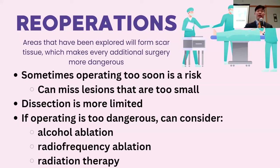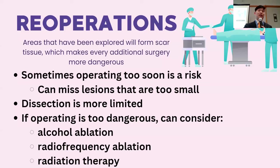Reoperations are different from the first approach. Operating too soon can carry risk because lesions that are too small — a lymph node under a centimeter — may be missed if you go in and try to get it. Dissections are usually kept more limited because scar tissue makes the area more dangerous; you don't know exactly where the nerves are and want to avoid injuring them. You only go for things proven to be cancer. At a certain point, you may decide operating is too dangerous and consider more minimally invasive options that don't work as well but cause less harm.